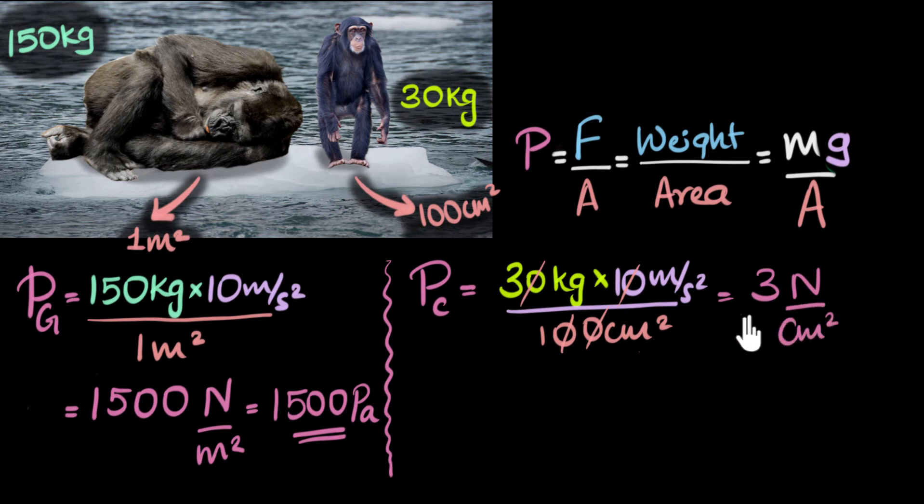And at first we might say, hey, look at this. This is such a small number compared to this. This is 1,500 and this is just three, right? But we cannot compare directly because the units are not same. This is in meters squared. So let's make the units same. So let's convert this centimeter to meters. How do we do that? Well, we know one meter is 100 centimeters.